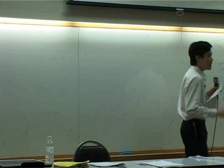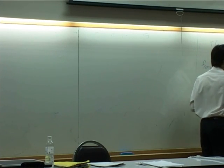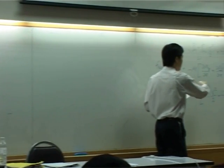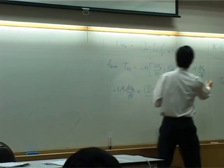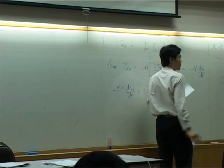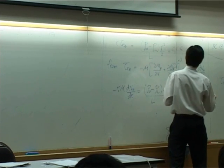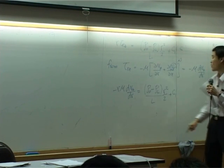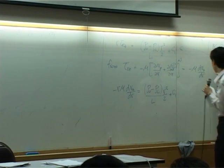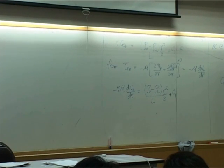Now, either you plug c1 in here and rearrange the equation again, or you plug tau rz by this term. You get the same equation. You can do both. Either plug c1 back in this equation and solve for vz, or plug this term back to tau rz. Either way, you get the same equation.